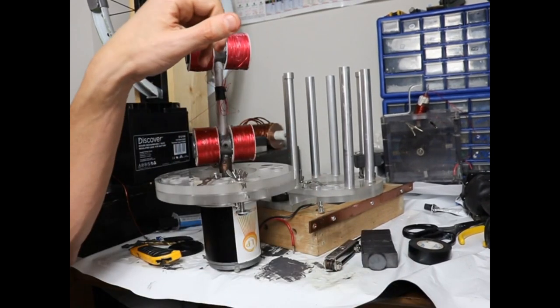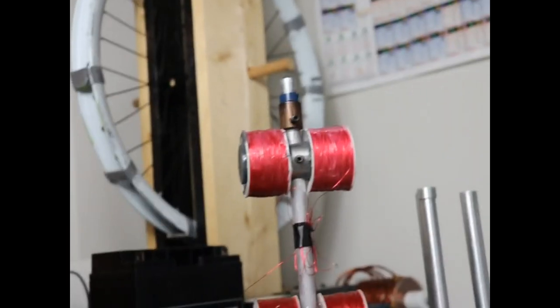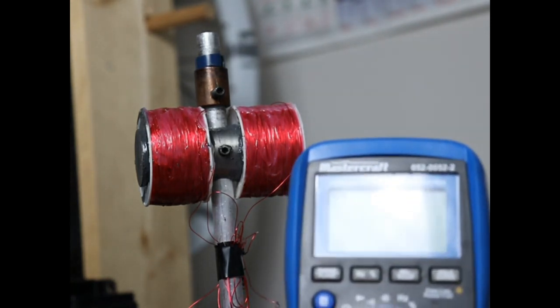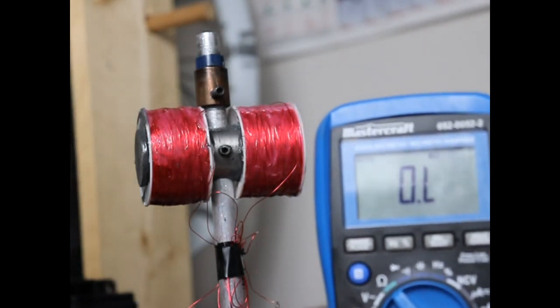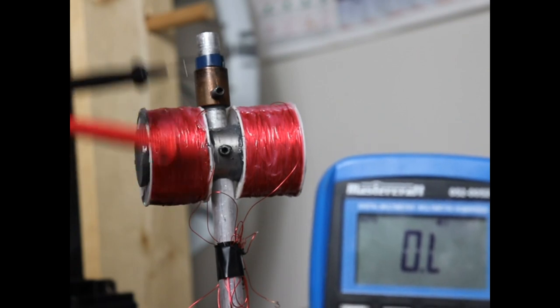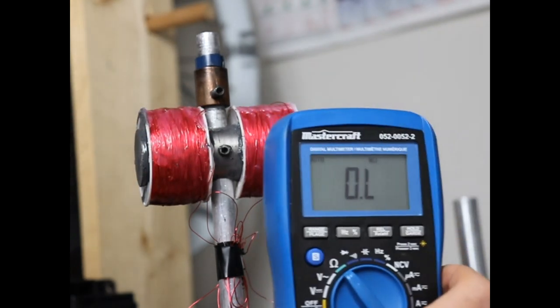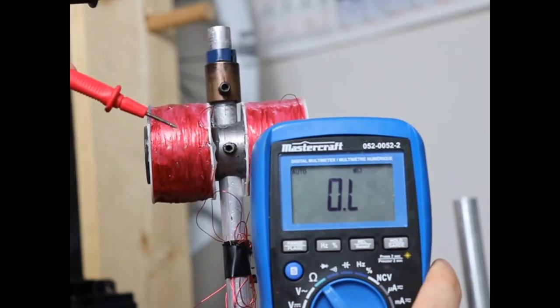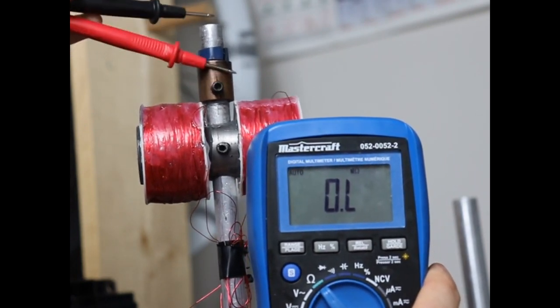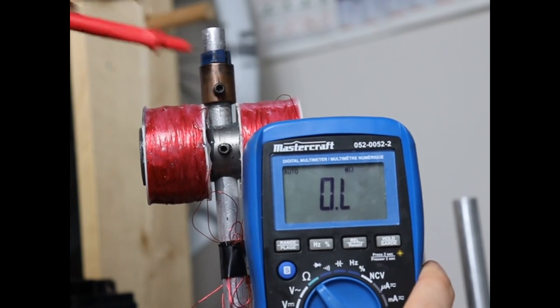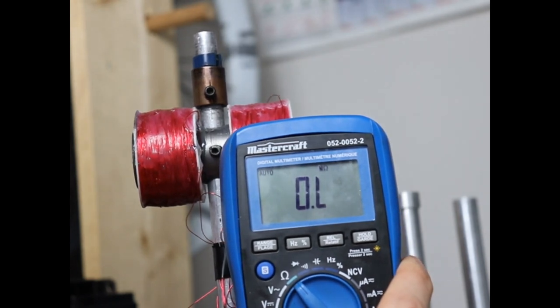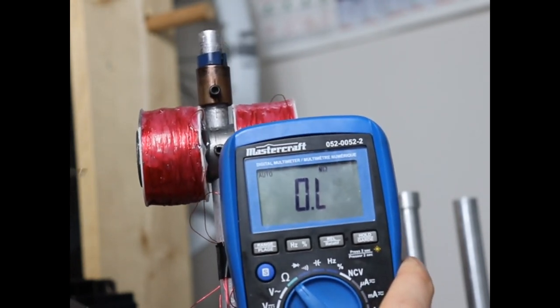So I've got my copper slip ring on up there, and the main thing I want to check for here is continuity, and that there is none between the slip ring and any of these other metal parts. I'm going to test the slip ring and the main metal shaft. There is no continuity, so I've got it insulated. And I don't want continuity between this bottom one here either. Again, there isn't. No continuity.